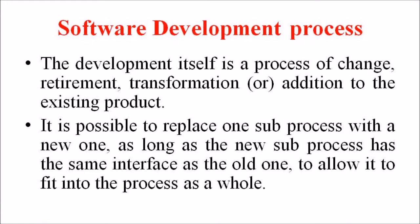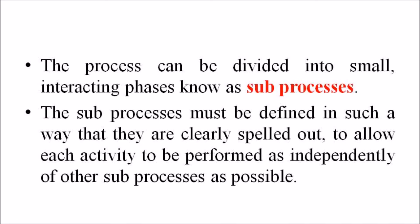For this, first of all we have to discuss the software development process. Software development can be viewed as a process — the development itself is a process of change, retirement, transformation, or addition to the existing product. It is possible to replace one sub-process with a new one, as long as the new sub-process has the same interface as the old one. The object-oriented approach provides us a set of rules for describing inheritance and specialization in a consistent way.